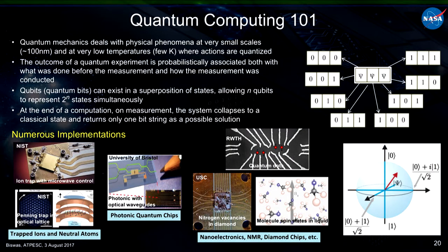Now let me talk about another big area — quantum computing — which is important for the federal government and all of computing. If Intel is making seven-nanometer chips, you can only go so far down. At seven or four nanometers, quantum effects are already going on, and at any smaller scale quantum will dominate. So this is something we are heavily interested in, and I know DOE is looking at it as well. Quantum mechanics deals with physical phenomena at very small scales and very low temperatures — it's an established science, not an art.